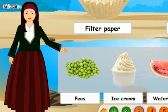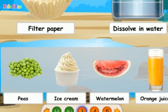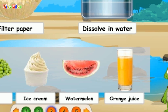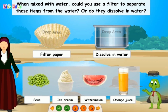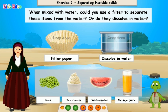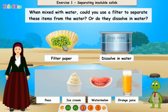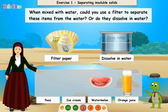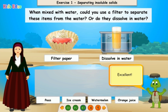Peas. Ice cream. Watermelon. Orange juice. Peas: insoluble. Ice cream: insoluble. Watermelon: insoluble. Orange juice: soluble. Excellent!